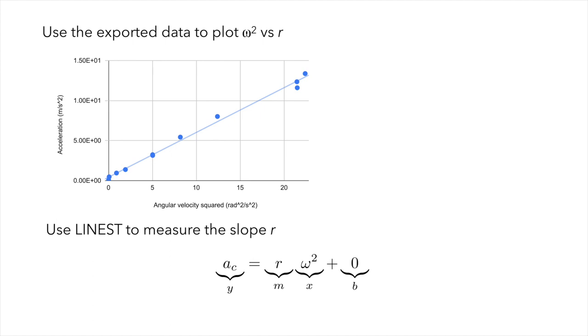Export the data to a spreadsheet program and load it. Make a graph of the acceleration versus the angular velocity squared using spreadsheet manipulations. Then, use Linest to measure the slope and intercept of a line going through the data points. You should get a result that looks something like that. From linearization, you know that the slope is going to be R, the distance from your phone to the axis of rotation around which it was spinning.